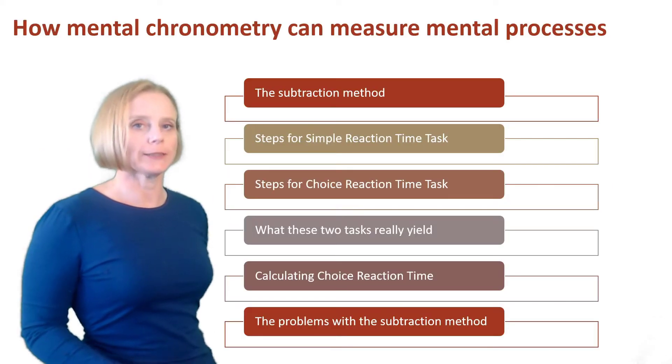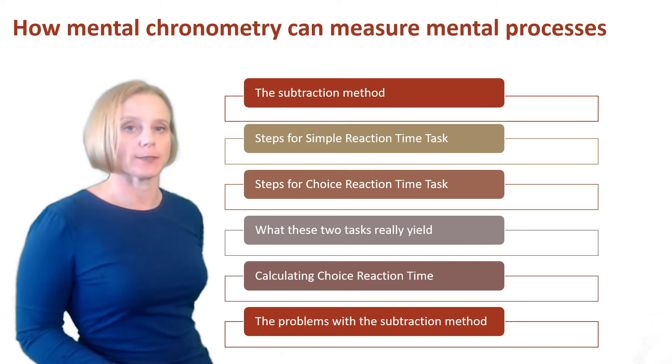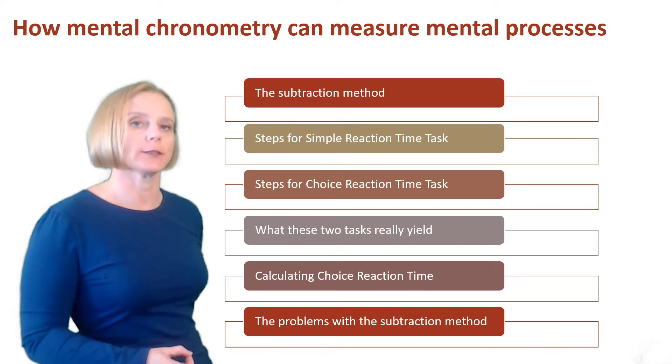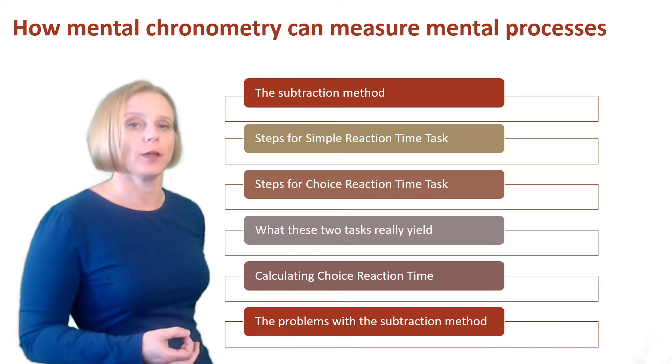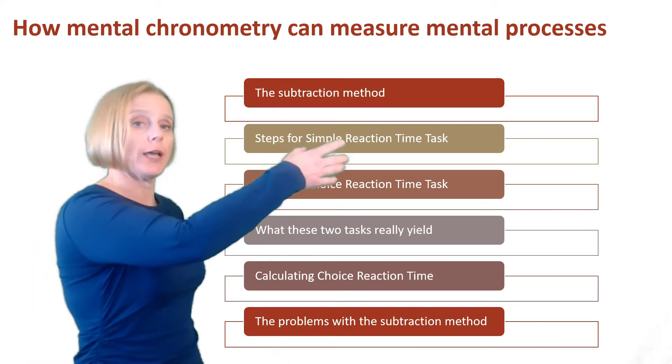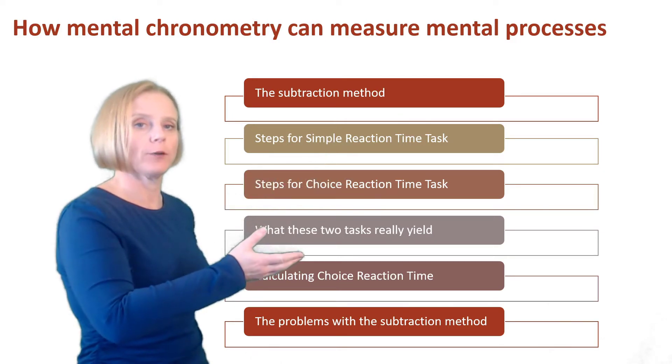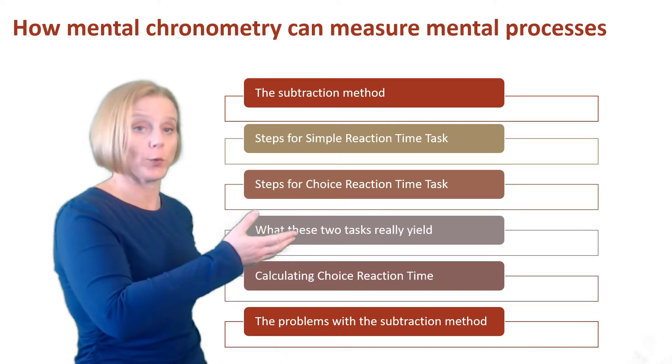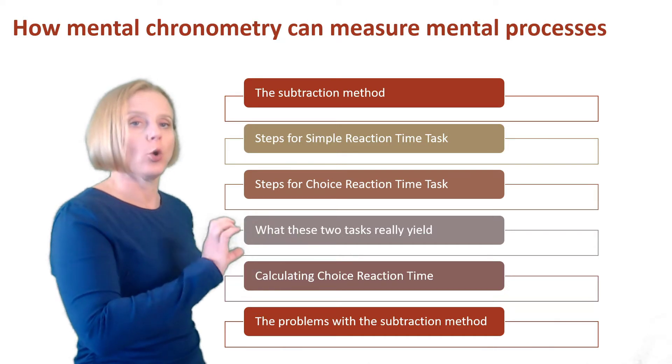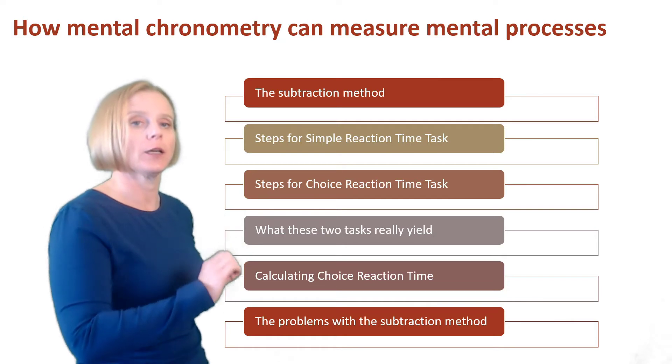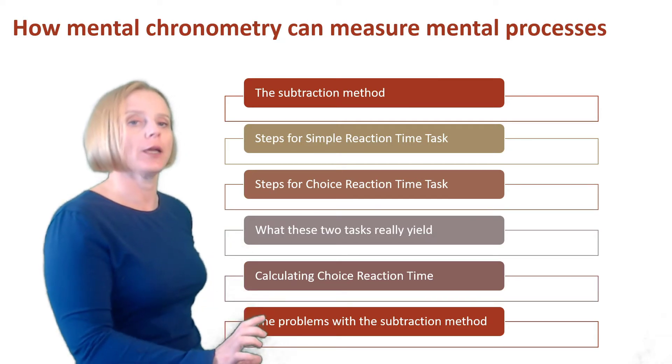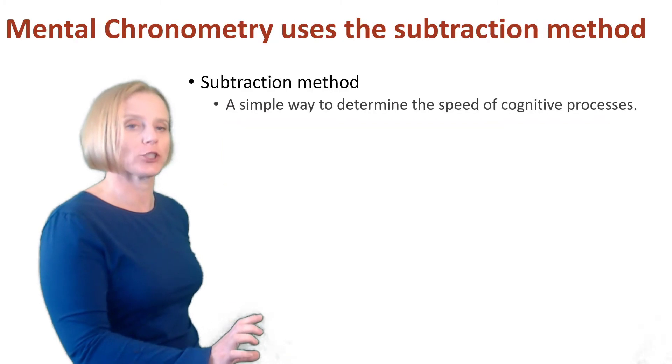Today, I'm going to discuss how mental chronometry can measure mental processes. We're going to discuss the subtraction method, and this involves steps for simple reaction time tasks, steps for choice reaction time tasks, what these two tasks really yield in terms of data, calculating choice reaction time, and the problems with the subtraction method.